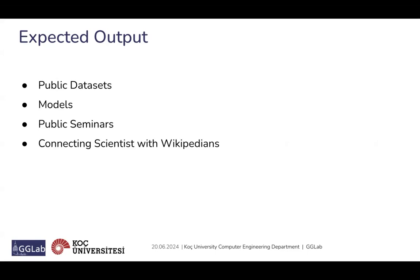Additionally, we aim to foster connections between scientists and Wikipedians, creating a collaborative environment for content development. Lastly, we will produce guidelines to aid Wikipedia editors in accurately translating technical terms using our models. These efforts combined will help bridge the gap between Wikipedians and scientists, enhancing the quality and accuracy of technical and scientific content on Turkish Wikipedia.